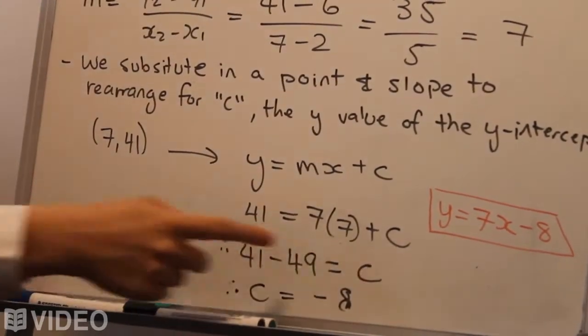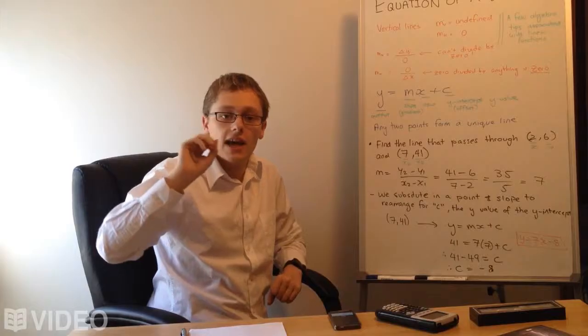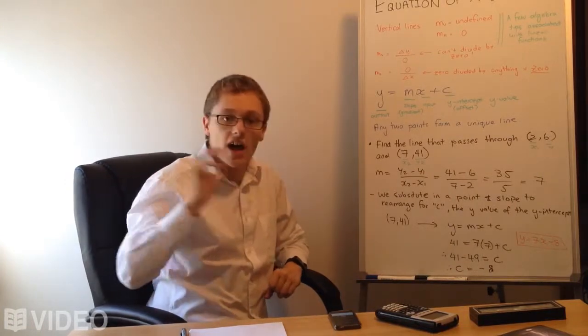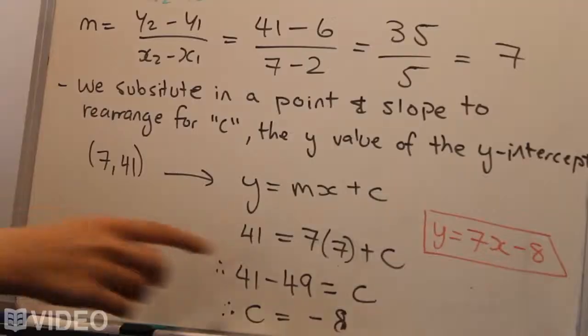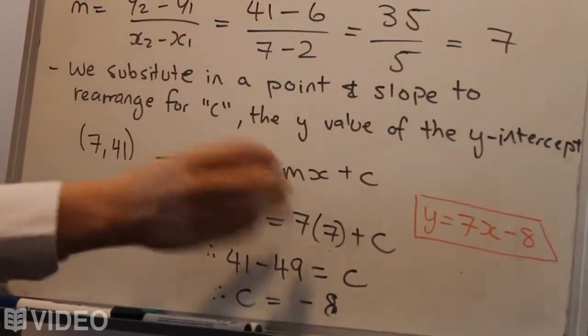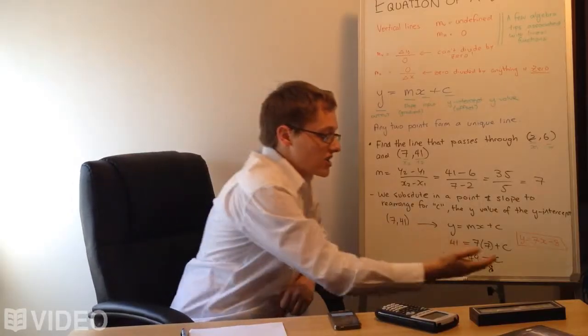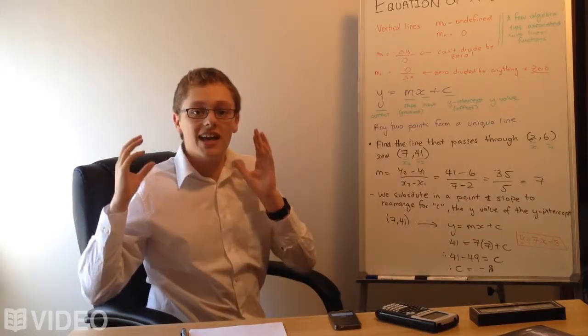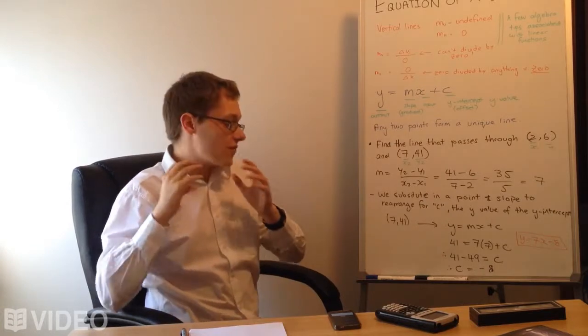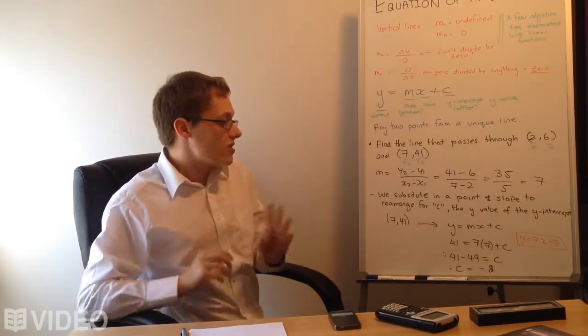What we do is subtract 49 from both sides because, remember, as with anything in algebra, if you do the same to both sides, it's all good. If we take 49 from here, we're effectively getting rid of that on the right-hand side, and we do the same on the left-hand side. Then we just have c left over, and we work out that this value of c for this specific line is negative 8. So the y-intercept y value is negative 8.